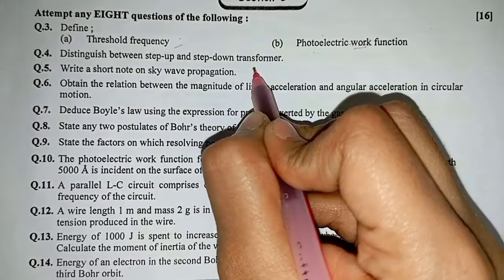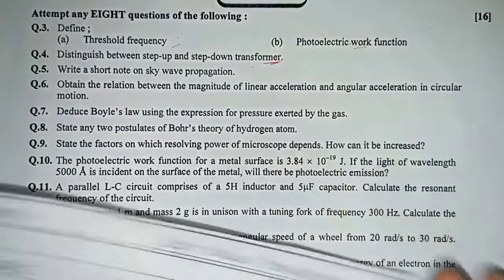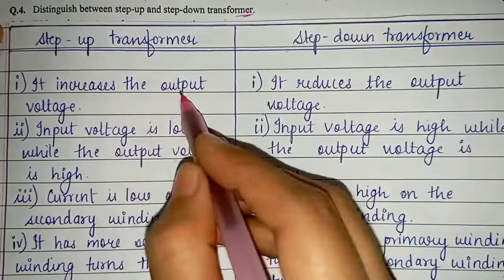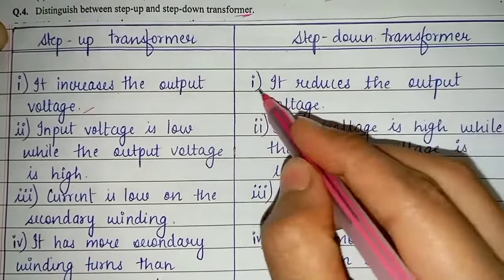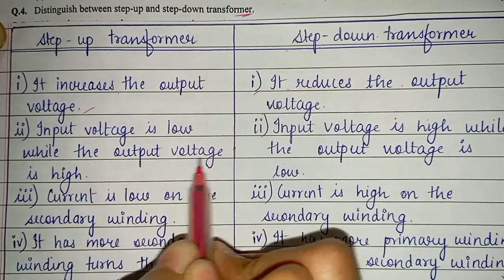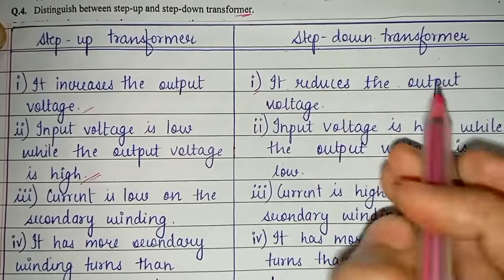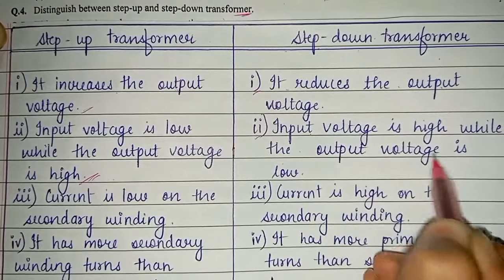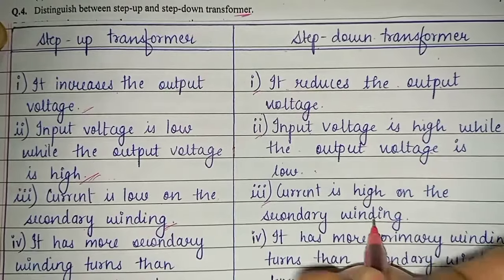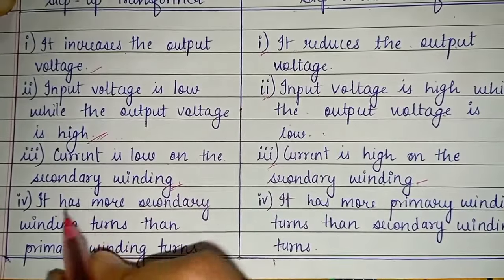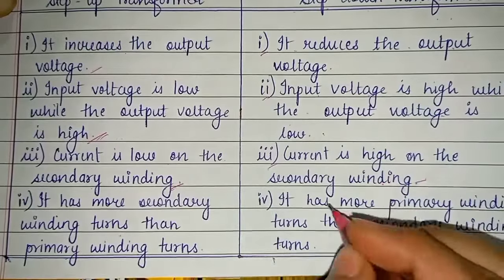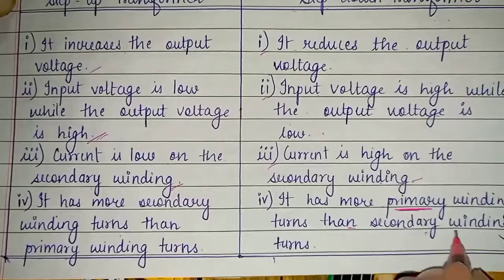Question number 4: distinguish between step-up and step-down transformer. Step-up transformer: it increases the output voltage; input voltage is low while output is high; current is low on secondary winding; it has more secondary winding turns than primary.